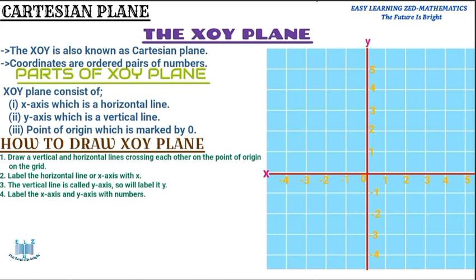You can see the X axis and Y axis both have numbers labeled. Basically, this is how you draw and label the X/Y plane. If you have questions, ask in the comment section. Thank you so much for watching — it has been easy learning mathematics. The future is bright, see you in the next video, and God bless you.